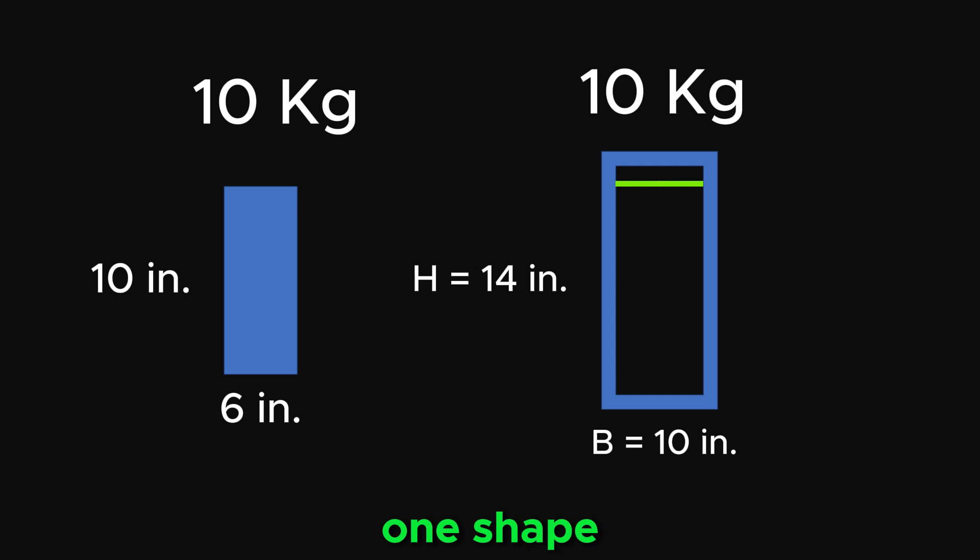Take two shapes with the same mass, let's say 10 kg. One shape is a solid rectangular beam and the other is a hollow rectangular tube.